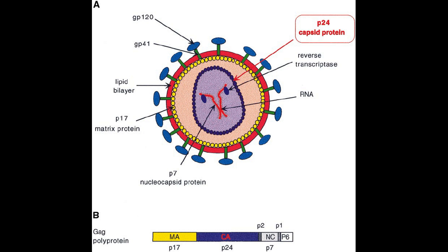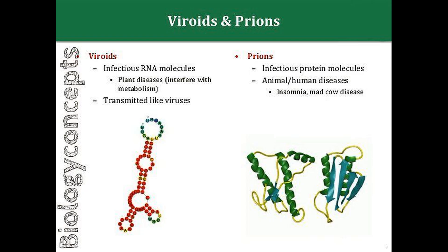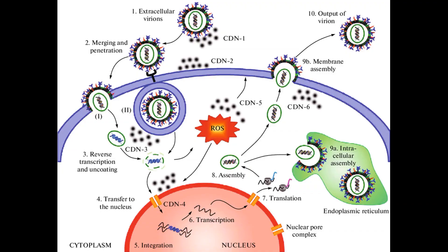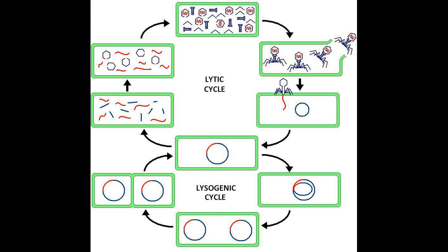Free-roaming virus particles, called virions, consist of genetic material in the form of DNA or RNA, which is encapsulated by a protective protein coat called the capsid. Some viruses also have an envelope made of lipids embedded with proteins. Some infectious agents, however, do not even have that much — viroids are just nucleic acids, and prions are just protein. Viruses release their genetic material into a cell, hijack the host's cellular machinery, and command the cell to produce the virus's necessary materials.